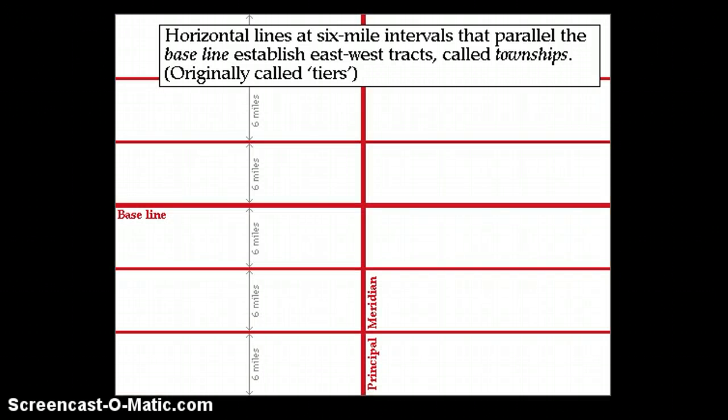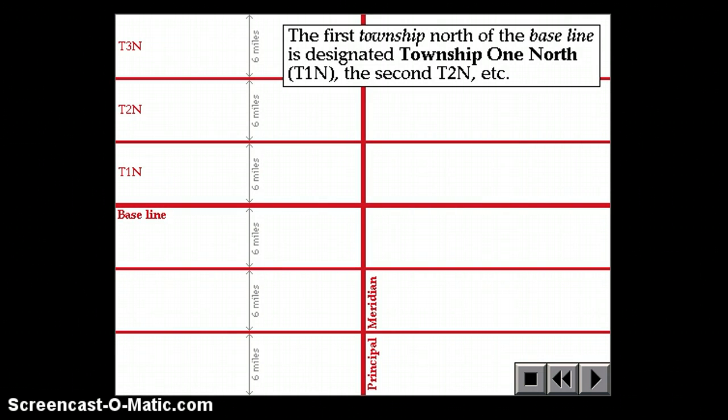Horizontal lines at six-mile intervals that parallel the baseline establish east-west tracks called townships. So there are the north townships, T1 north, T2 north, and T3 north.